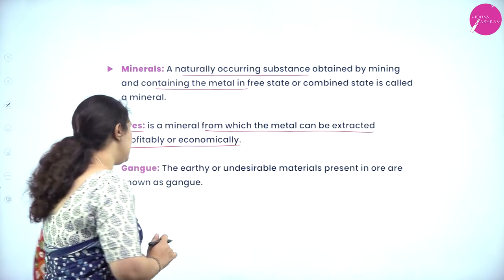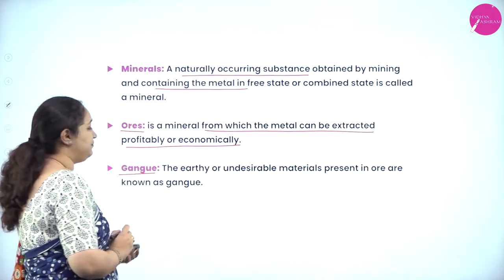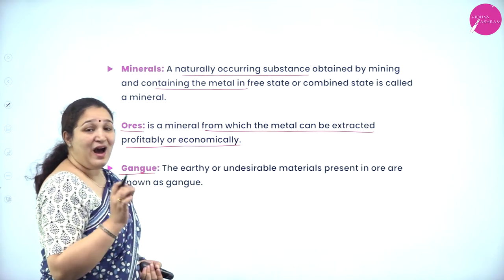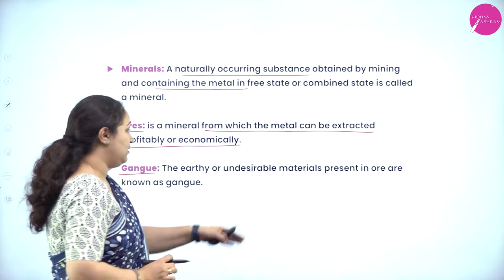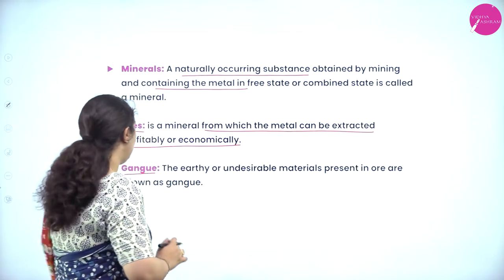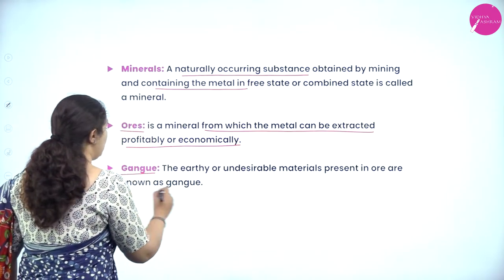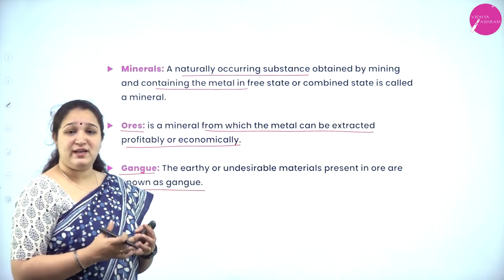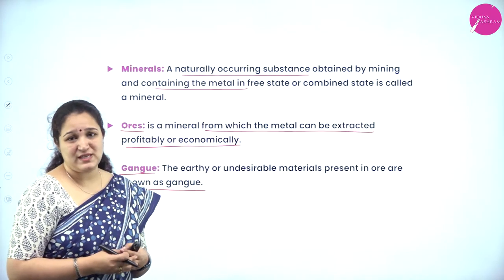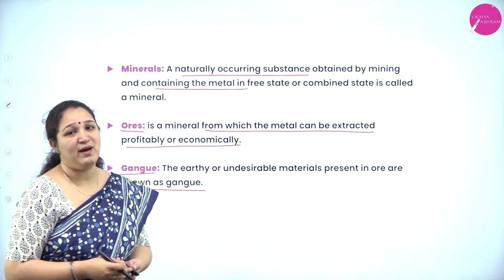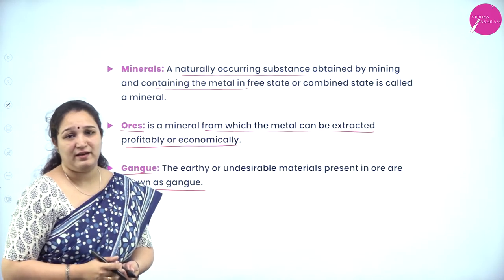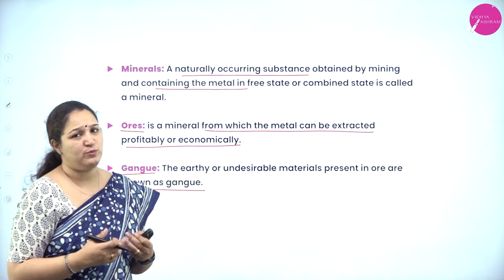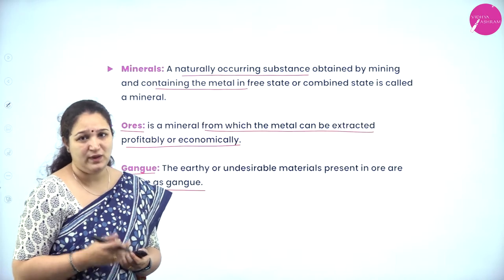Next, what is gangue? The earthy or undesired material present in ore is known as gangue. So any impurities present in the ore we call them as gangue. These are the three terminologies which you have to be very familiar with.